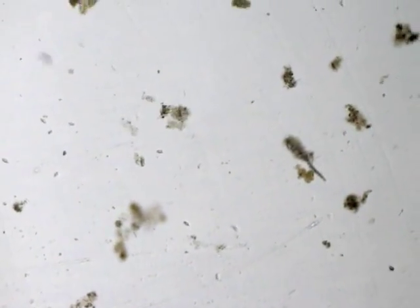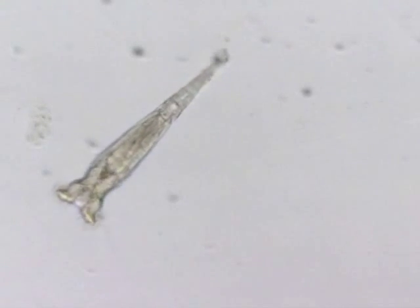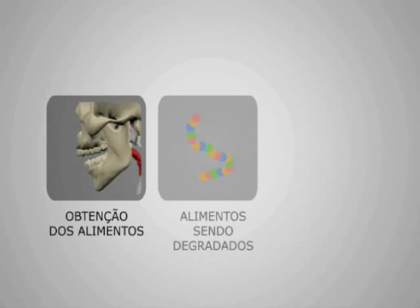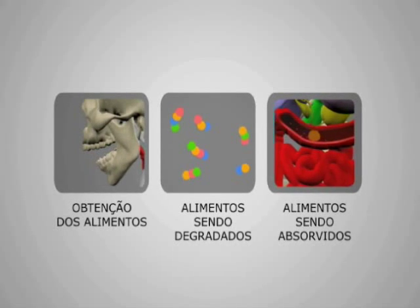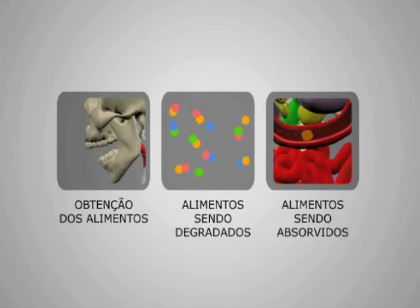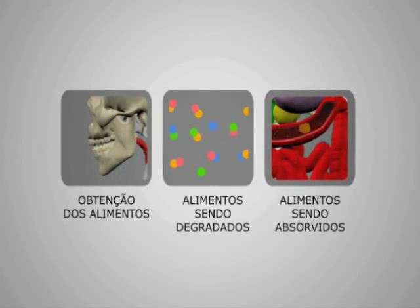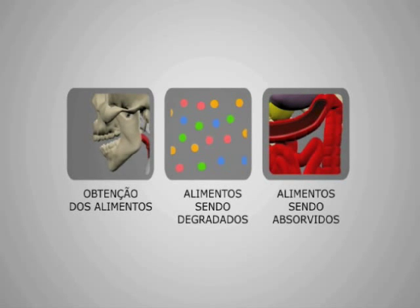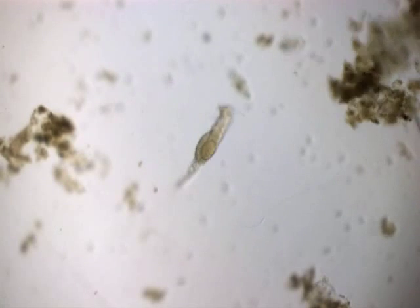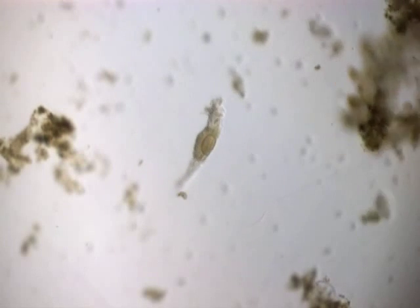Mas para os rotíferos, os cílios não servem só como meio de transporte. Eles também funcionam como uma ótima ferramenta para capturar alimento. Os rotíferos se alimentam exatamente como a gente: ingerem os alimentos pela boca, de onde transitam por outros órgãos do sistema digestório, até que os resíduos não aproveitáveis são expelidos pelo ânus. Apesar do seu pequeno tamanho, os rotíferos possuem um sistema digestório completo. Na dieta dos rotíferos entram bactérias, algas, protozoários e matéria orgânica em decomposição.